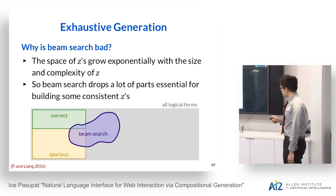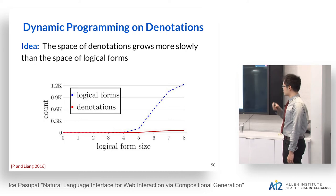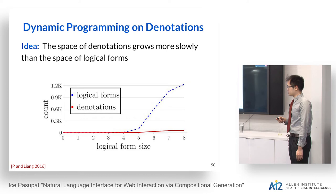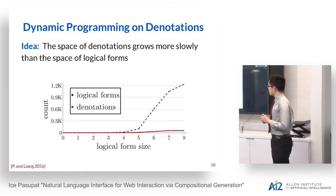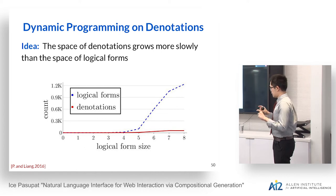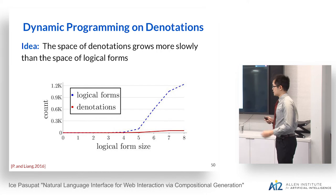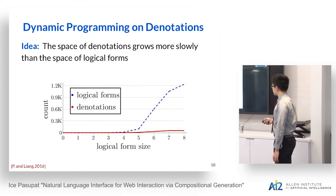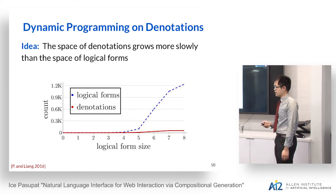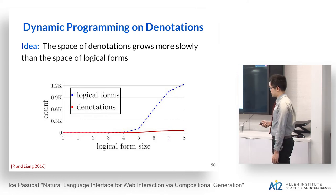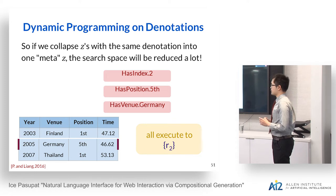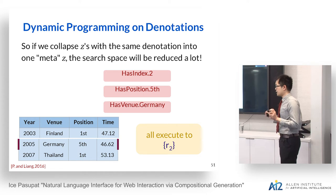The key observation is that even though the space of logical forms grows exponentially, the space of possible denotations grows much more slowly in the context of tables. Denotations are just lists of rows, cells, or numbers — this space grows much more slowly as logical form size increases. Using this intuition, we propose Dynamic Programming on Denotations (DPD): collapse logical forms that have the same denotation into one meta-logical form, greatly reducing the search space.